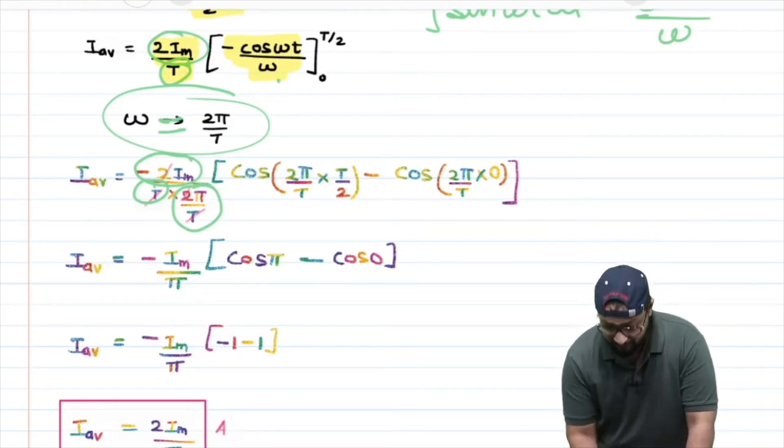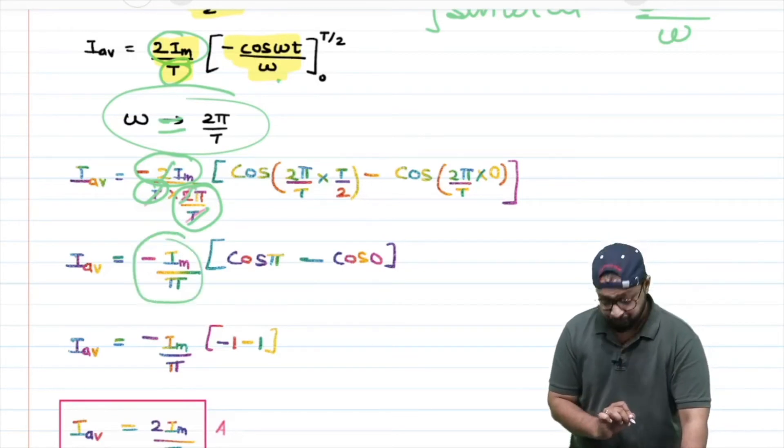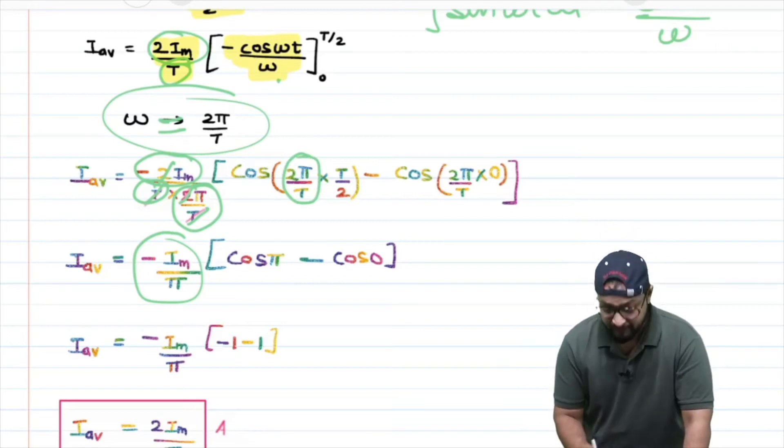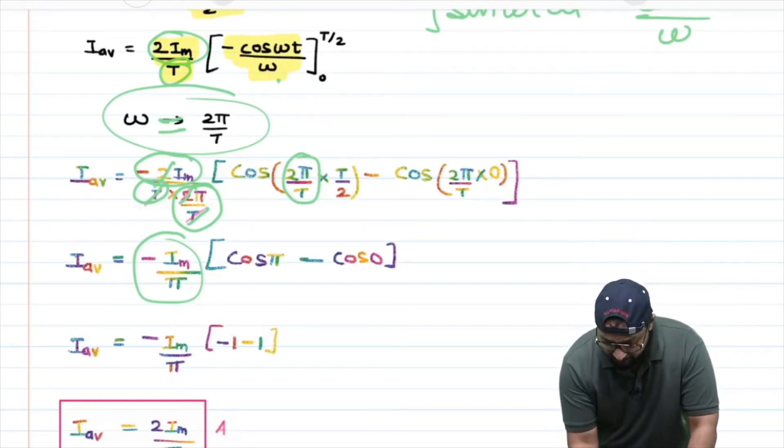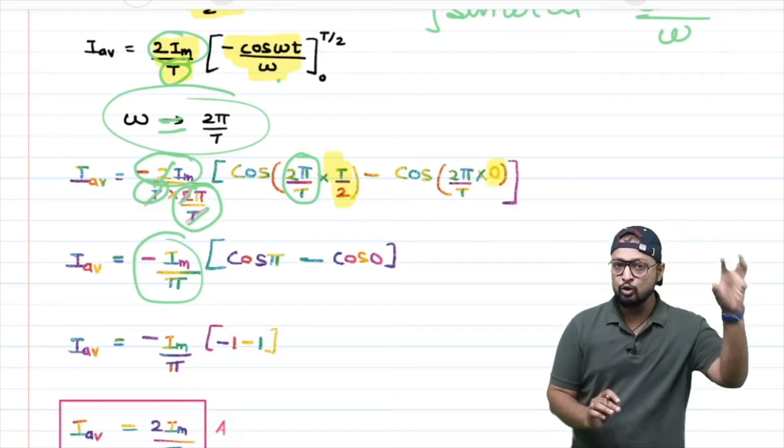There was 2I_m, so that's 2I_m. There was T, so that's T. And where omega was inside, in place of omega I wrote 2π/T. T cancels with T, 2 cancels with 2. What remains? -I_m/π.